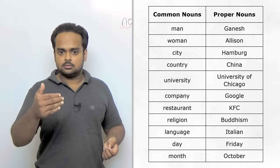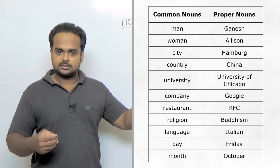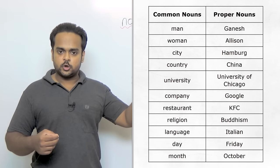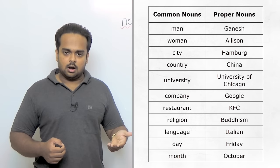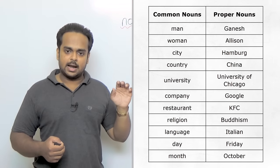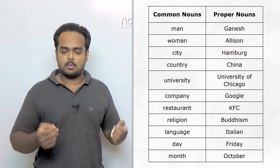Woman in the same way is a common noun—it could be any woman. But Alison is the name of an individual, so a proper noun. In the next two, city and country are common nouns, but Hamburg and China are the names of one city and one country, so proper nouns.